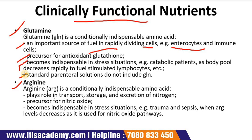Arginine is another conditionally indispensable amino acid. It plays a role in transport, storage, and excretion of nitrogen, and is a precursor of nitric oxide. It becomes indispensable in stress situations such as trauma and sepsis, when arginine levels decrease as it is used for the nitric oxide pathway. Arginine supplementation may benefit microcirculation and protein anabolism and has been associated with increased muscle and protein metabolism and intestinal motility. However, there is concern that increased arginine intake in septic patients may increase nitric oxide production, resulting in hypotension, poor perfusion, and increased risk of multi-organ failure.